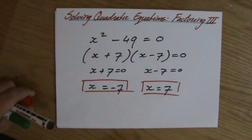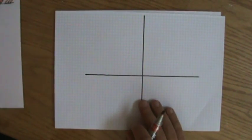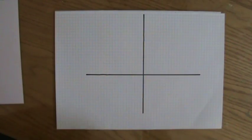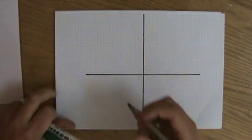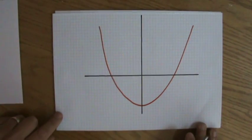Now, if I would have to sketch that very quickly, a quadratic equation is a parabola. It's going to look, this is a sketch, roughly like this.